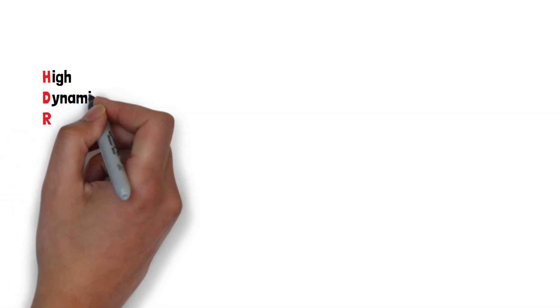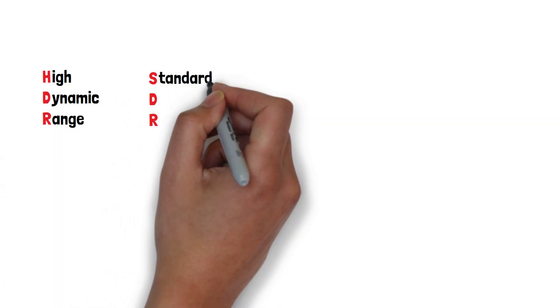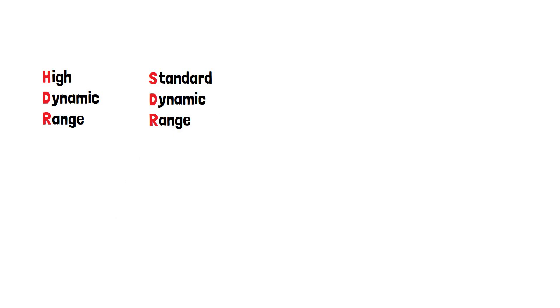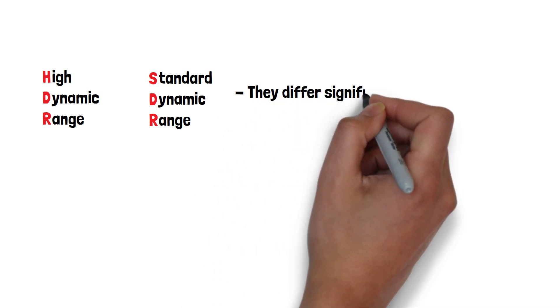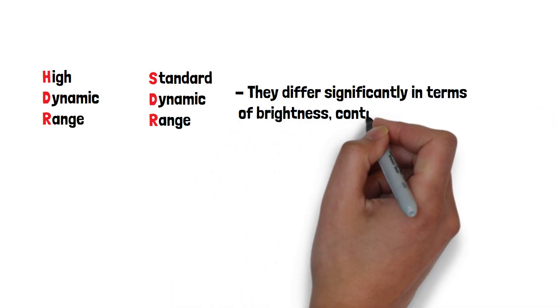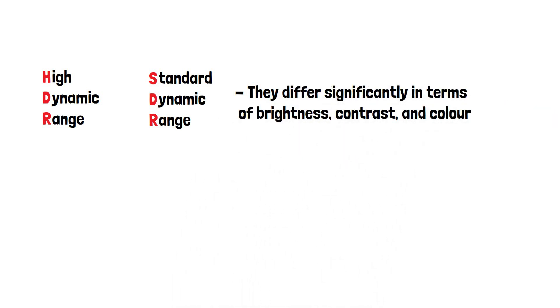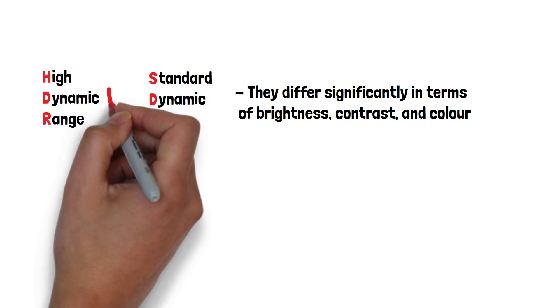HDR, known as High Dynamic Range, and SDR, known as Standard Dynamic Range, are two different techniques used to represent images and videos. They differ significantly in terms of brightness, contrast, and color. In this video, we're going to do a comparison between the two.